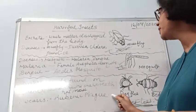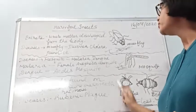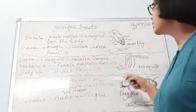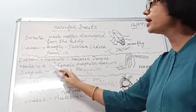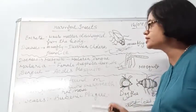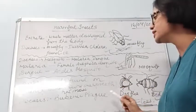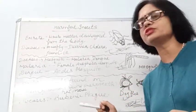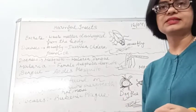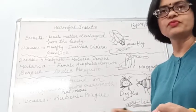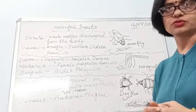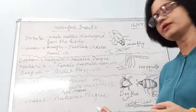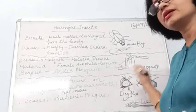So we have learned about the housefly, which spreads diseases like cholera, jaundice, and diarrhea. Then the mosquito, which spreads malaria and dengue — malaria caused by the female Anopheles and dengue by the Aedes. Then the wingless insects, the fleas, found on rodents — animals that move through drainage pipes and dirty places like rats and mice — which carry insects causing the dangerous disease bubonic plague.